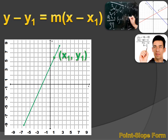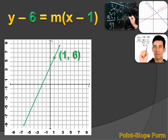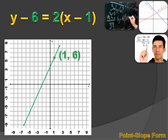The point we chose on our line has coordinate values of 1 and 6. So I can go back to my point-slope form equation and replace Y1 with 6 and X1 with 1, and the equation reads Y minus 6 equals M times X minus 1. I also know what M is — the slope is a rise of 2 and a run of 1, or a slope of 2. So replacing M with 2, this line in point-slope form is Y minus 6 equals 2 times X minus 1.